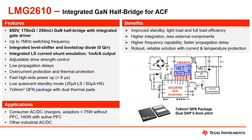The LMG2610 alongside the UCC28782 ACF controller is meant to be a simple two-chip solution for your primary side regulation of an active clamp flyback converter. This is where we have two built-in GAN dies inside the package with the level shifters and other features. We're using a unique QFN device that's 7 by 9 millimeters, and it has two different heatsink pads to help cool each die individually for good thermal performance.